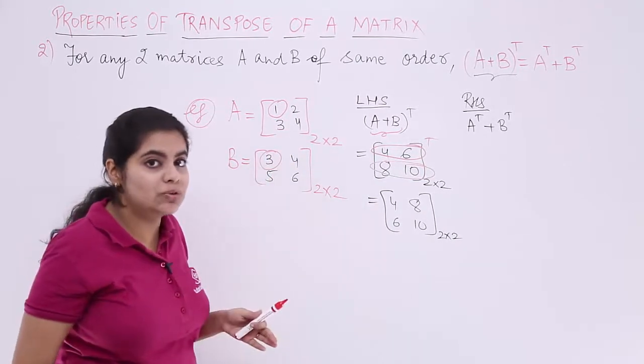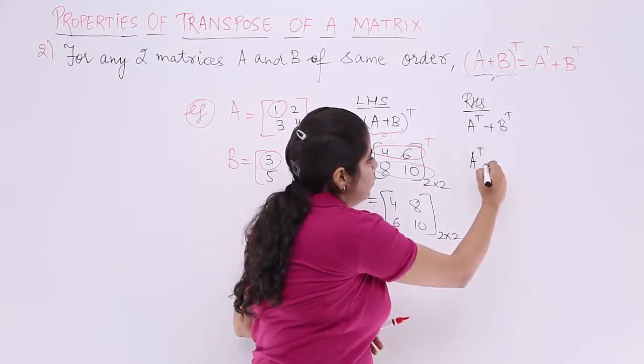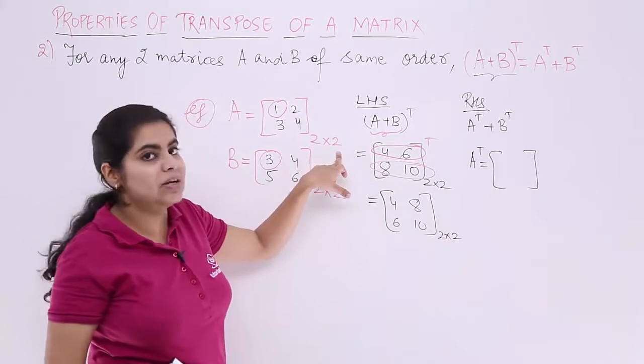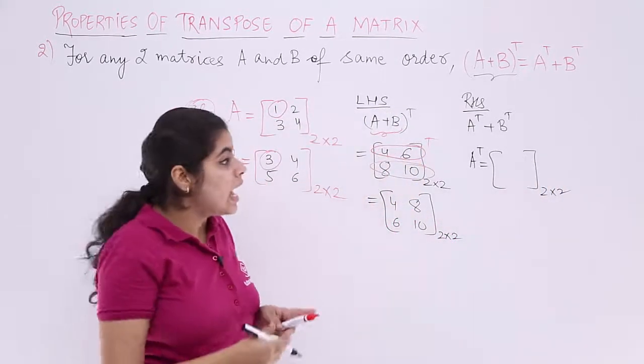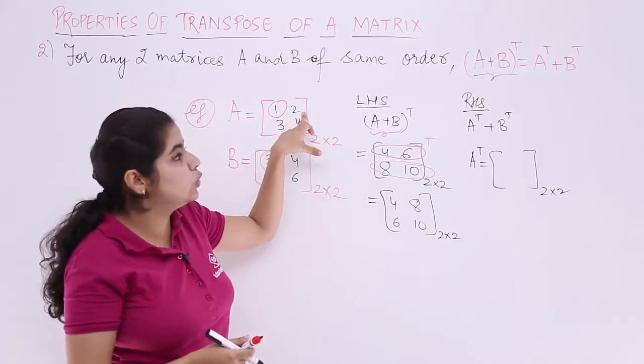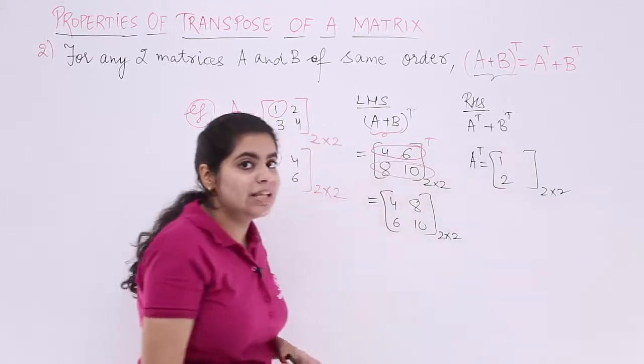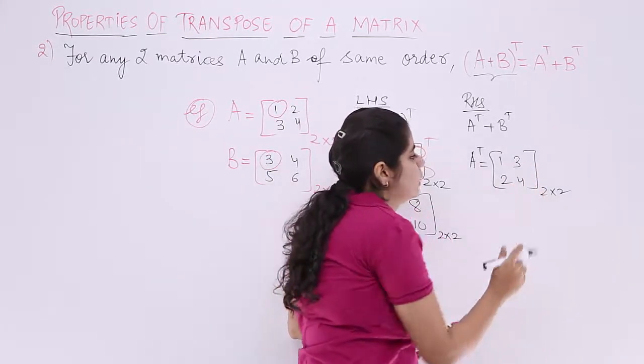A transpose will be 1, 2, 3, 4 but in the other order. A transpose is basically again a 2 by 2 matrix because if you interchange even then you get 2 by 2, 1, 2. First row becomes the first column and then second row 3, 4 becomes the second column. This is A transpose.